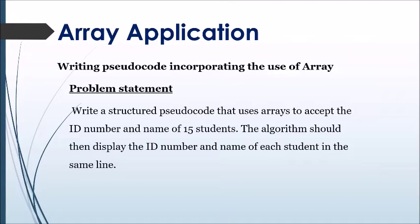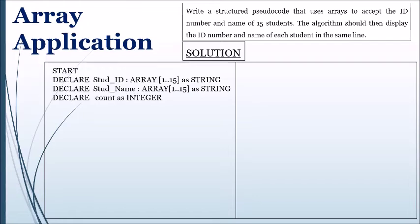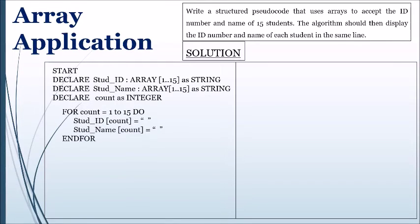Array application: the following shows the application of all array principles discussed so far. The problem requires the use of arrays to accept and store the ID number and name for 15 students, then display the ID number along with the student's name on the same line. The solution begins with the keyword 'start', followed by the declaration of two arrays — one for student ID and one for student name — each with a capacity of 15 and a data type of string. A variable 'count' is declared as integer. A for loop initializes each array by assigning a space to each element within both arrays, controlled by the counter variable count.